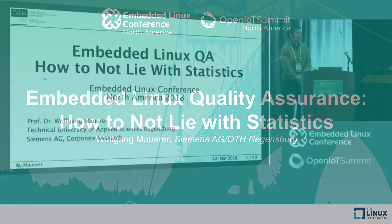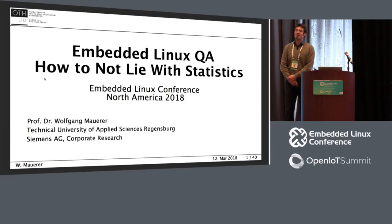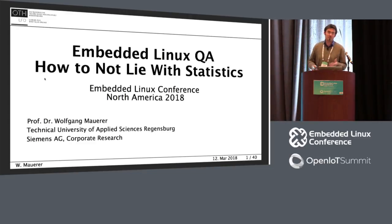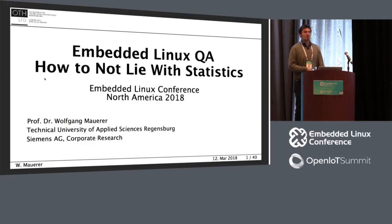Welcome to the final session of the day. My name is Wolfgang Mauerer. I simultaneously work for two companies, one is a university, the Technical University of Applied Sciences in Regensburg, and the other one you may have heard of is Siemens Corporate Research, where I'm active in the embedded Linux team and have been there for like 10 years by now. What I'm going to talk to you in this late session is about embedded Linux quality assurance, and I decided to give it the catchy subtitle, How to Not Lie with Statistics.